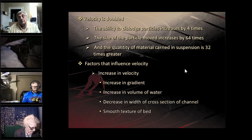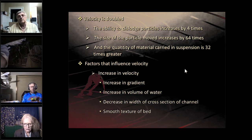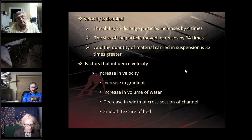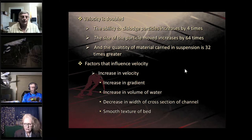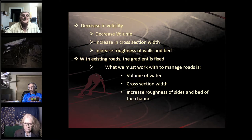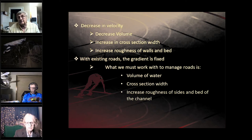Factors that influence velocity: increases in velocity result from an increase in road gradient, increase in volume of water on the road and in your ditch lines, decrease in the width of the cross section of the channel — narrow ditches produce higher velocities. If you get ruts in the road and water runs down them, you narrow that channel and get increased scour. The smoother the bed, the smaller the rock, the faster the water. Coarser rock tends to slow it down.